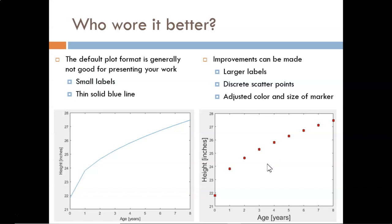The default format on the left uses a solid thin blue line and size 12 font. The labels are obviously difficult to read. Also, the solid line implies continuous data. In actuality, the data was measured just once a year, so expressing it as a continuous line is not the most honest.